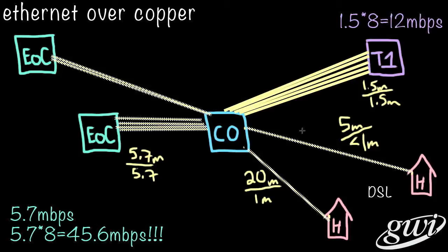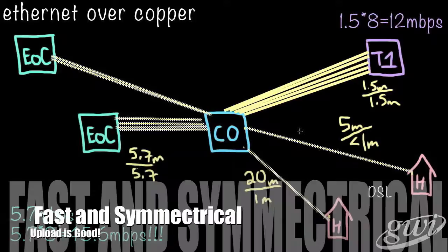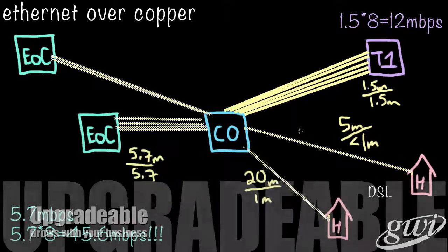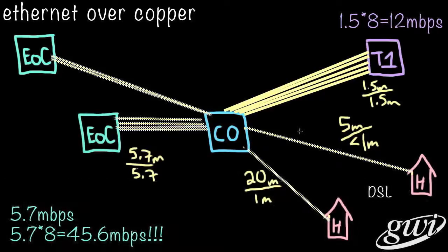So let's recap. EOC is much lower in price than bonded T1s. It's fast and it's symmetrical. It's easier to upgrade. It's reliable because of that built-in redundancy. With all of that, you can open up all those fantastic cloud services and communications like voice over IP and video conferencing.